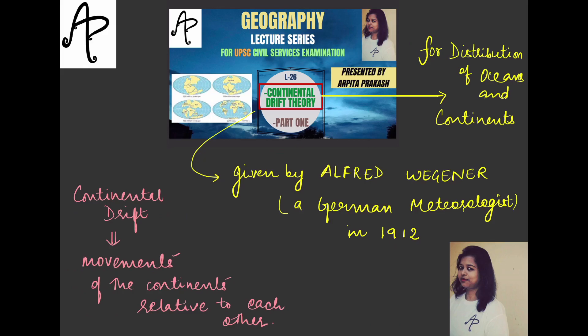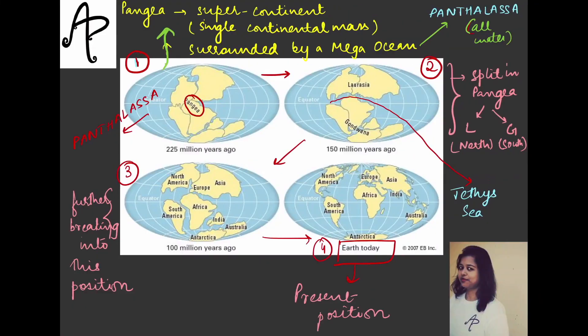Just to quickly revise that for you, because if you would not be able to recall the theory, it would be difficult to understand the further aspects we are covering. So let's quickly try and remember what the theory is all about. It was given by Alfred Wegener, and he proposed that about 225 million years ago, we did not have these current positions of the continents. It was just one single continental mass called Pangaea, or a supercontinent.